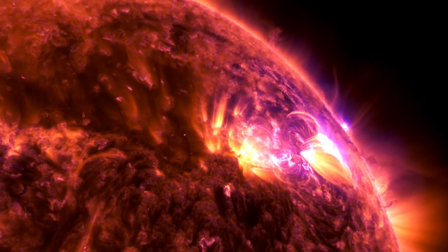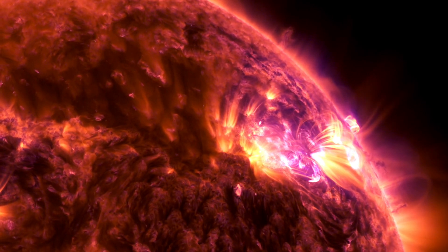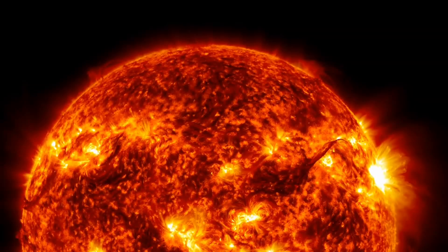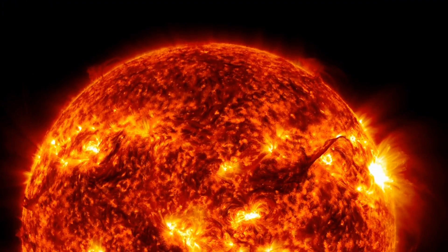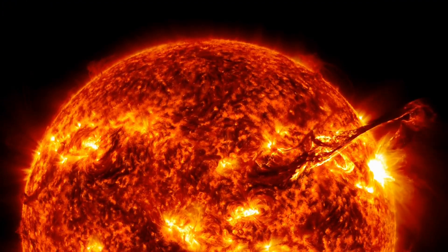Space weather, encompassing the energetic activity of the sun, involves phenomena like solar flares, coronal mass ejections, and solar energetic particles. These events, originating from the sun's dynamic surface and atmosphere, can traverse space, influencing both planets and spacecraft.